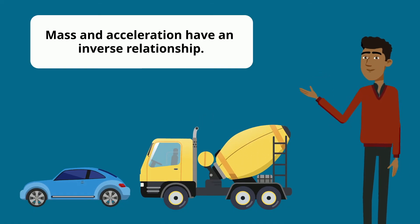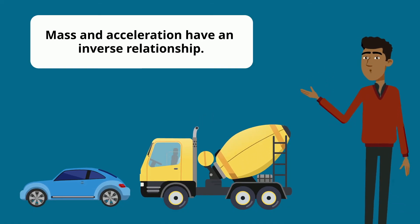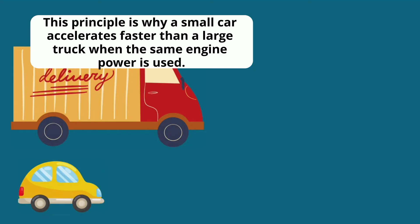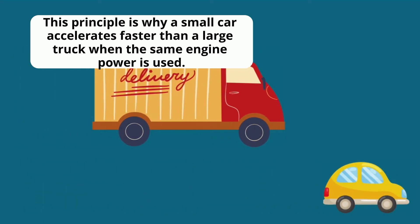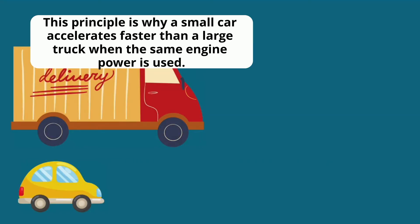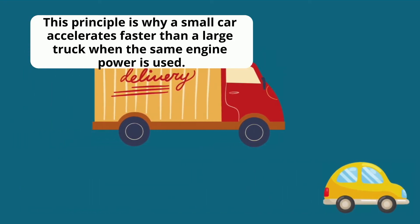Mass and acceleration have an inverse relationship. This principle is why a small car accelerates faster than a large truck when the same engine power is used.